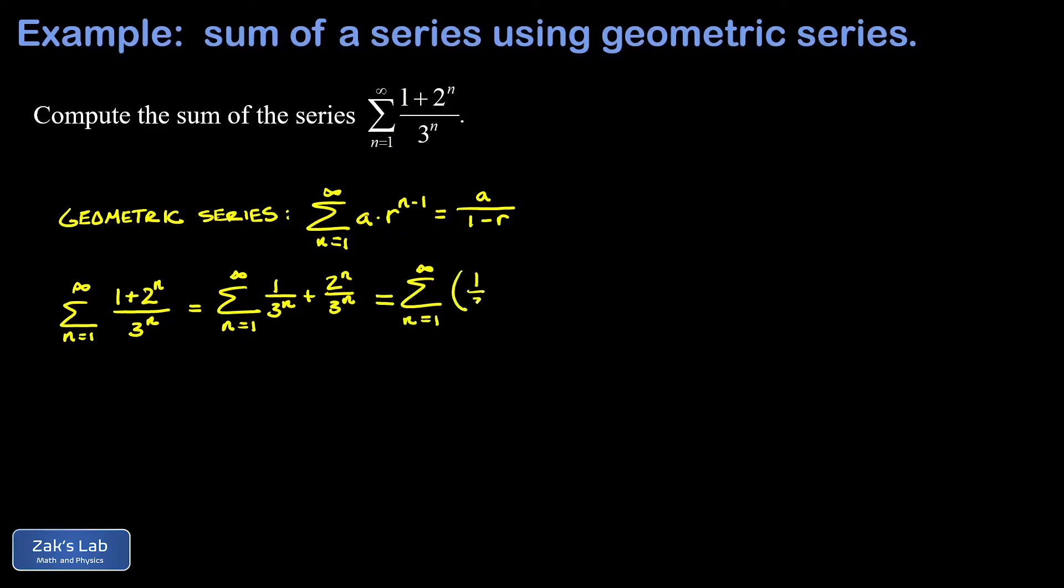The first one I'm going to write as one third to the nth power. There's that key property that we're multiplying by another factor of one third every time n steps up by 1. So this is geometric. Then my second series I'm going to write as two thirds to the n. Also a geometric series.